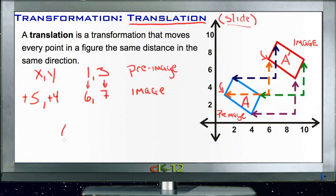So what we would say is that any location on our first image translates to (x + 5) and (y + 4) on our new image.